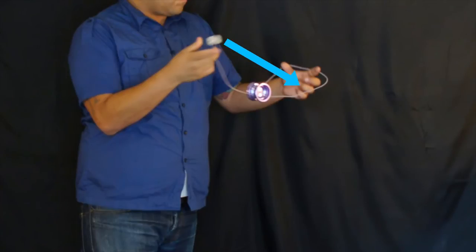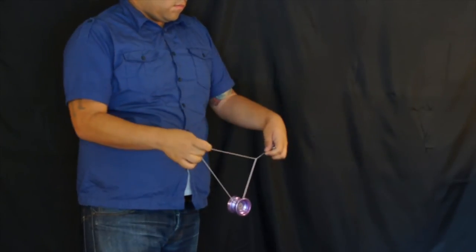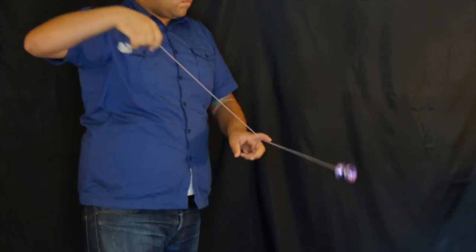Now the counterweight has to go all the way through into the loop. That's why we've spread the fingers out so that it goes through there. Grab the counterweight, pull out, and you should be in a green triangle.